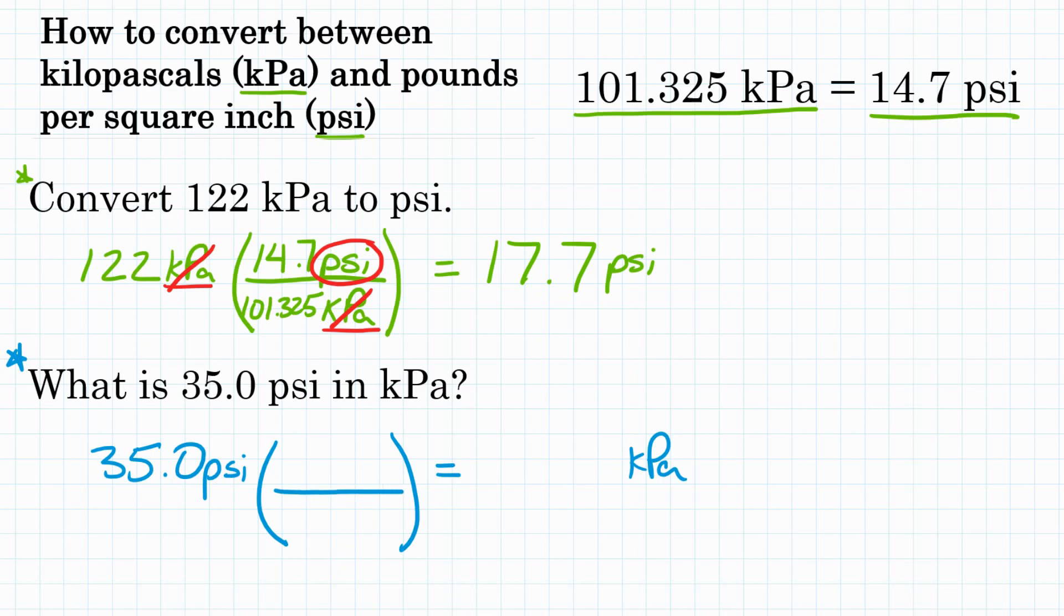It's going to look just like the one above, but it will be flipped. It will be the reciprocal. We'll have psi on the bottom and kPa on top, because we want our units to cancel out. We're going to use that same relationship up here, except, again, this will be flipped. We'll have 14.7 psi on the bottom and 101.325 kPa on top. And, again, we're doing this so that psi cancels, and this time we'll be left with kPa.